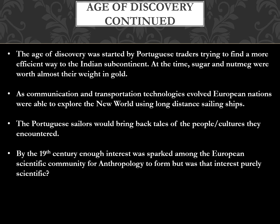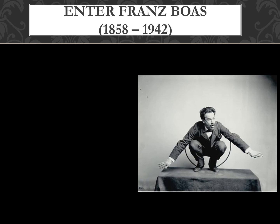By the 19th century, enough interest was sparked in the European scientific community for anthropology to form as a discipline. But was that interest purely scientific, or were there culturally laden theories? Much of early anthropology from the early 18th through mid-19th century produced hypotheses about cultural variation that were really race-laden. Early anthropologists were trying to prove that races exist biologically and that certain cultural traits as well as innate biological traits like intelligence could be attributed to race.